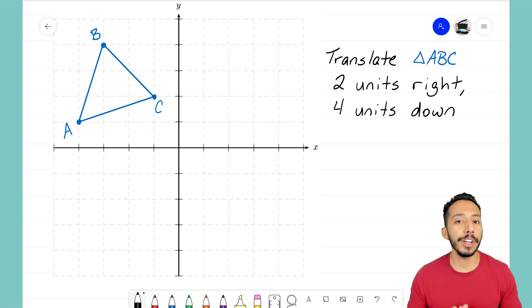So let's look at an example of how we can translate a triangle. We have our triangle here, triangle ABC, and it asks us to translate triangle ABC two units to the right and then four units down.